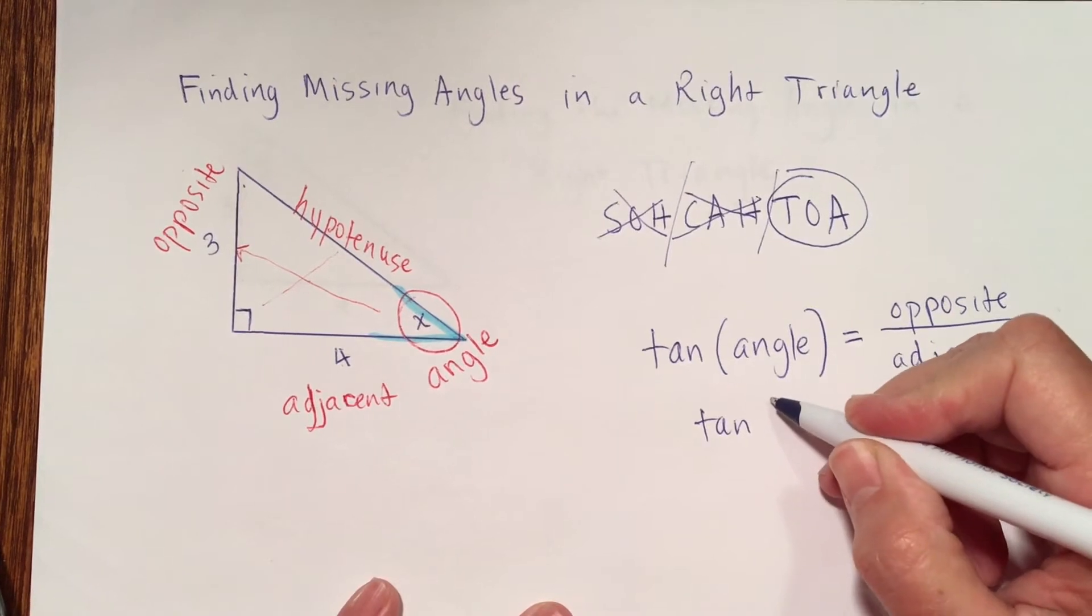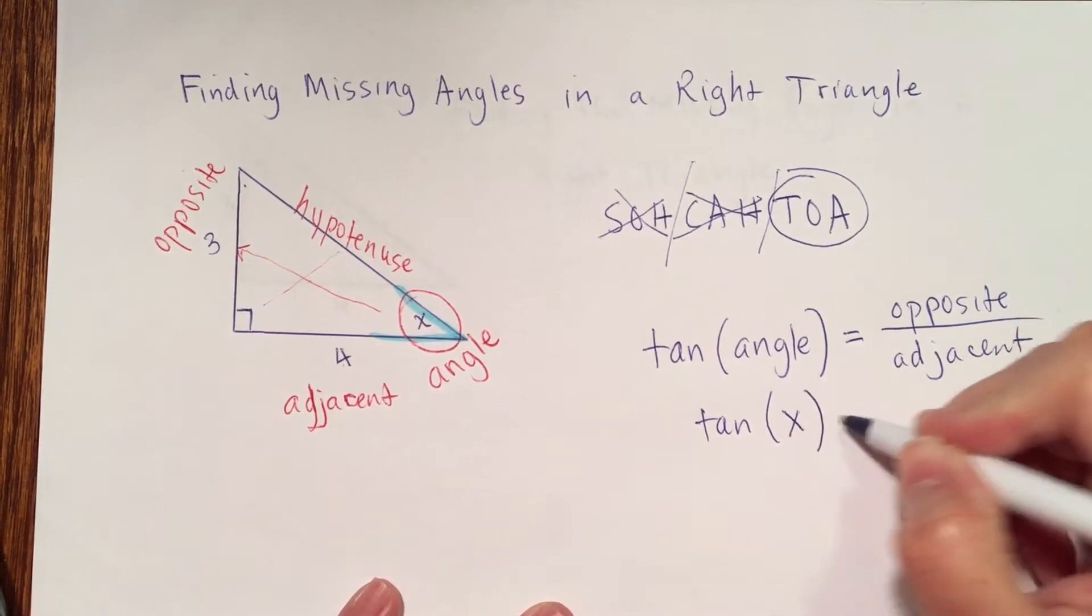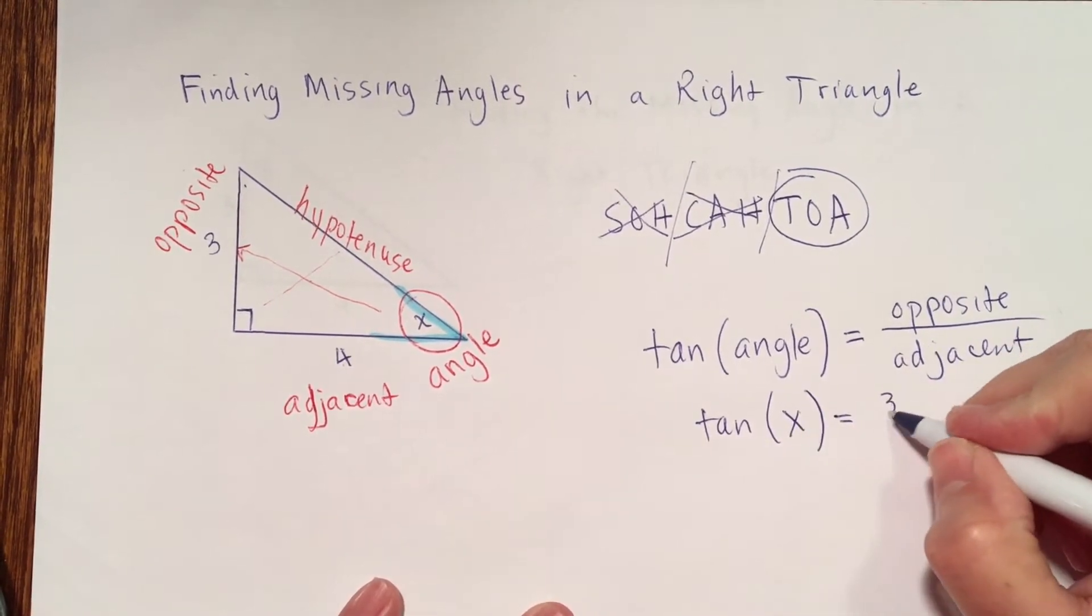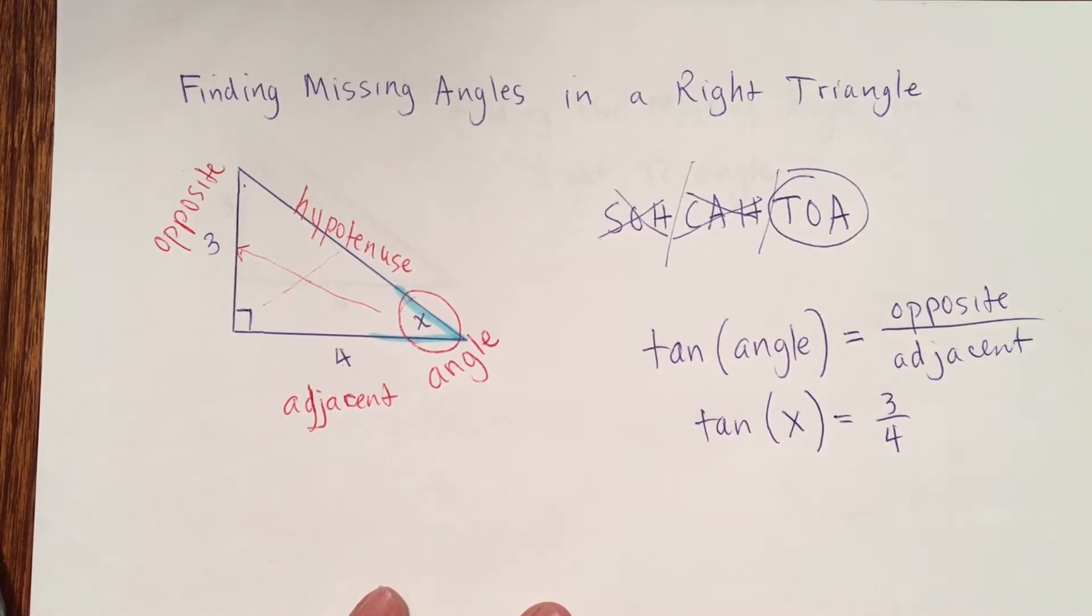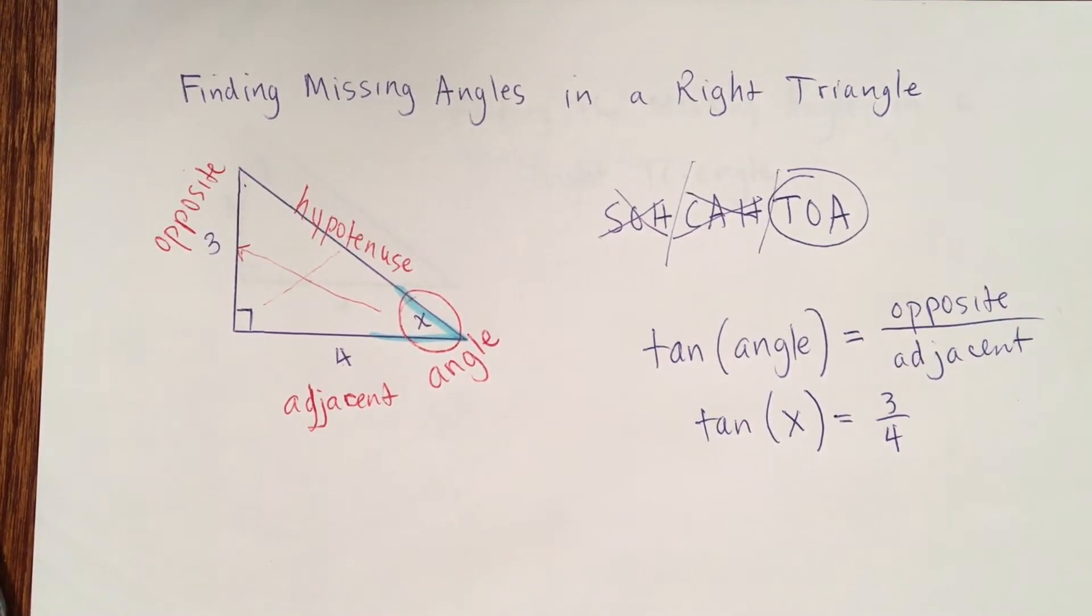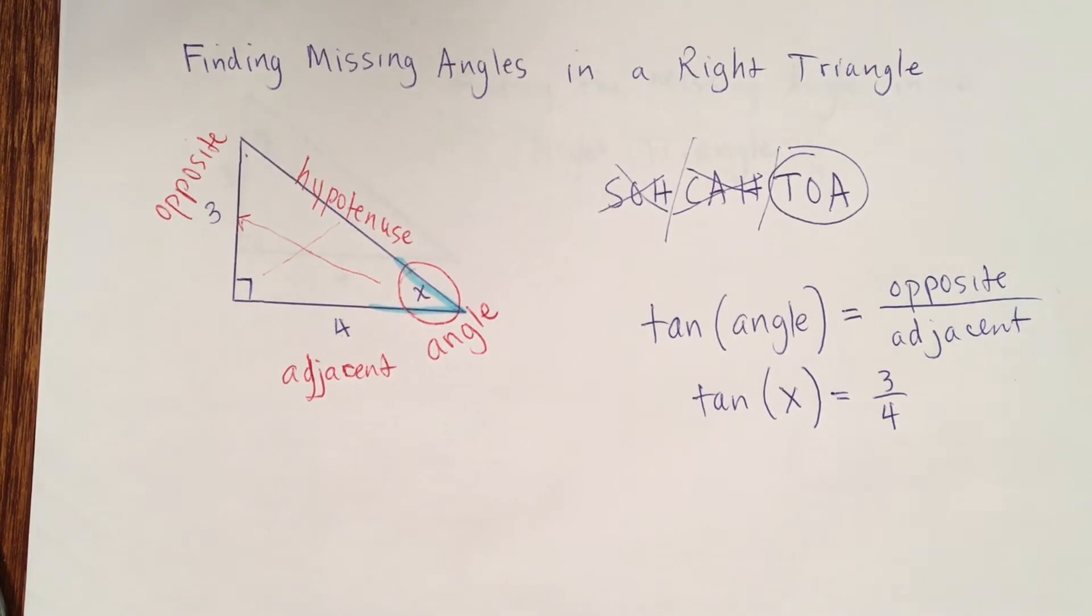I'll write tangent of x equals 3 fourths. On this problem, I want to solve for the angle.